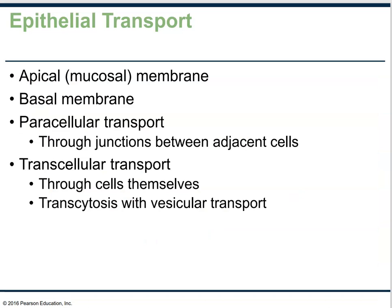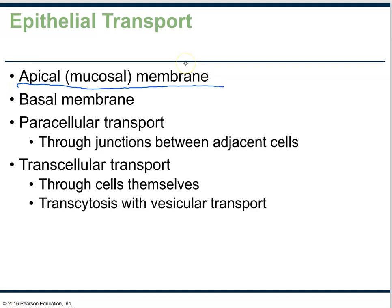Now let's finish with epithelial transport, which is very important in physiology. We have many places where materials need to be absorbed — think of the renal tubules or the small intestine absorbing digested nutrients. The epithelium has two sides: the apical membrane, facing the interior of the tubular structure, and the basal membrane. We often need to do transcellular transport — going across the entire cell — or paracellular transport, going between two cells.